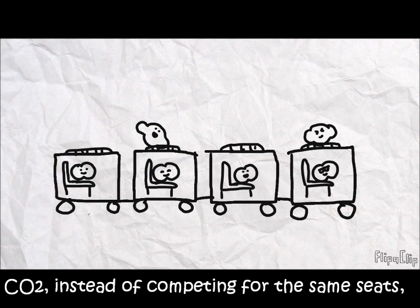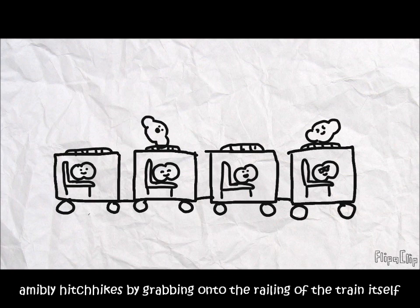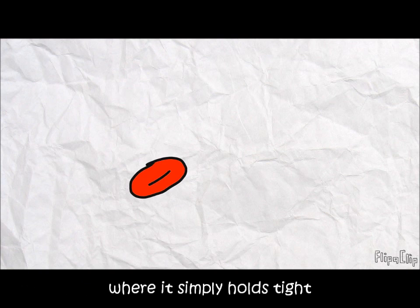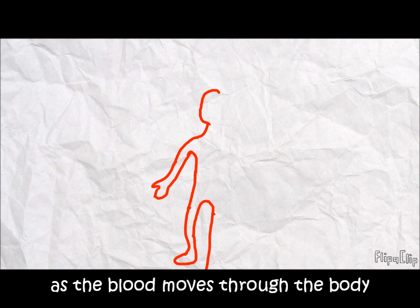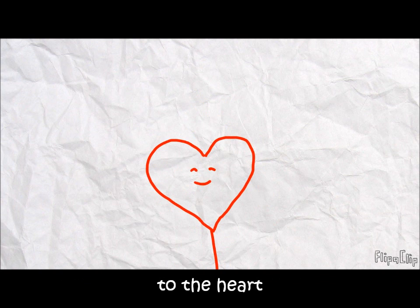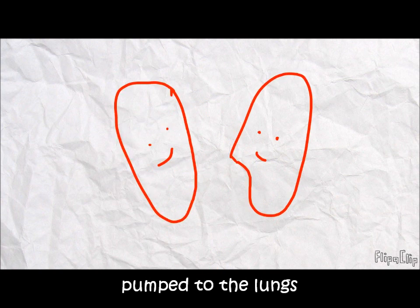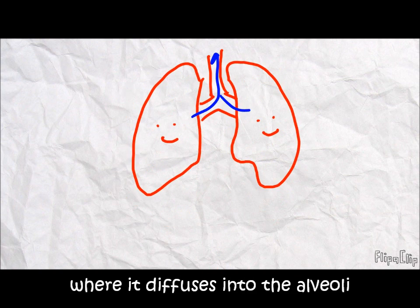And then the carbon dioxide, not competing for the same seats, they grab onto the rail of the train itself, amicably hitchhiking, where it simply holds tight as the blood moves through the body to the heart, pumped into the lungs, where it diffuses into the alveoli and is finally exhaled.